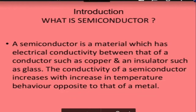Where we need control over whether electricity or electrons pass through or not — that property needed to be present in a material. Scientists found and defined this material. A semiconductor is a material which has electrical conductivity between that of a conductor like copper and an insulator such as glass. The conductivity of a semiconductor increases with increase in temperature.